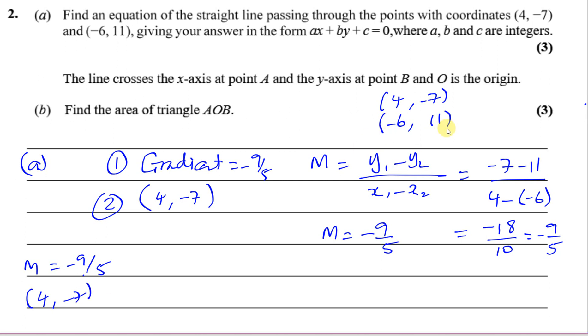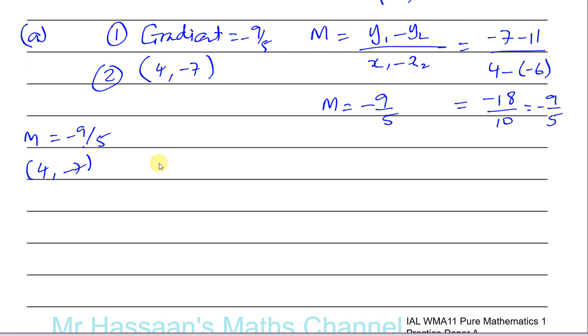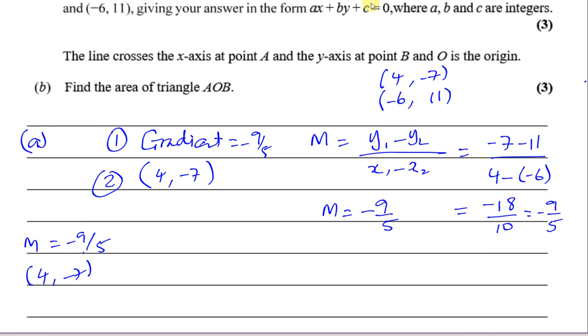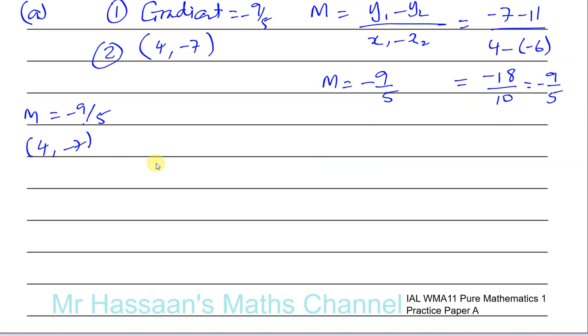When you have to express your answer in the form AX + BY + C = 0, I personally prefer to use this form of the equation of the straight line: Y - Y1 = M(X - X1).